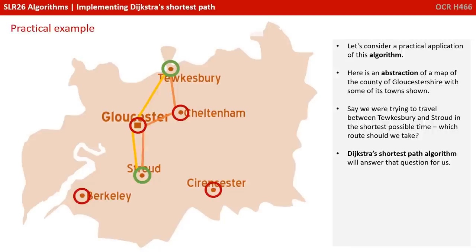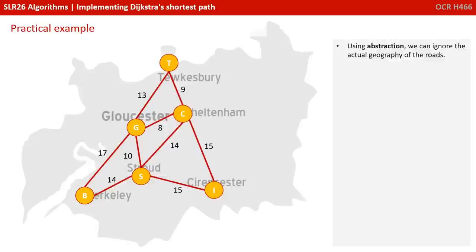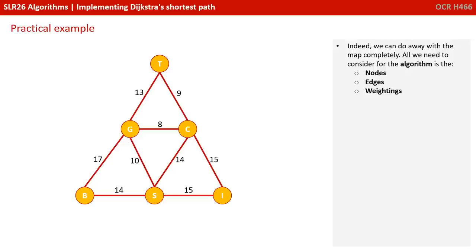Let's consider a practical application of this algorithm. Here's an abstraction of a map of the county of Gloucestershire with some of its towns. Say we're trying to travel between Tewkesbury and Stroud in the shortest possible time — which route should we take? We'd store the relevant information in a graph data structure, where each town becomes a node, routes become edges, and distances become edge weightings. Using abstraction, we can ignore the actual geography of the roads — all we need are the nodes, edges, weightings, and how they're connected.